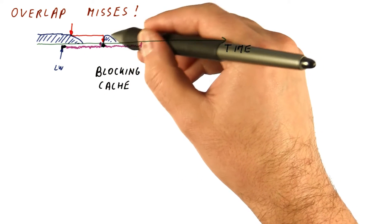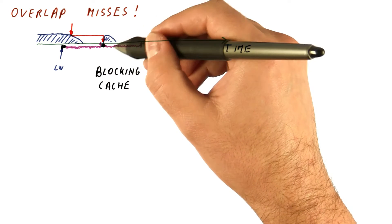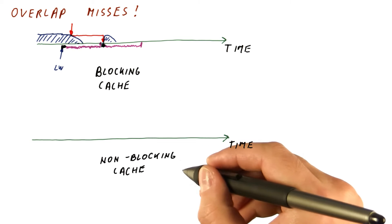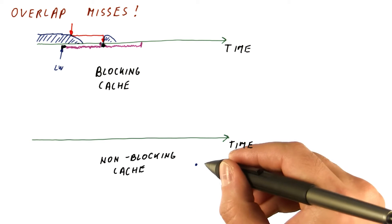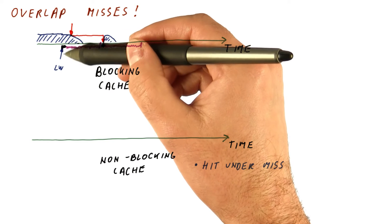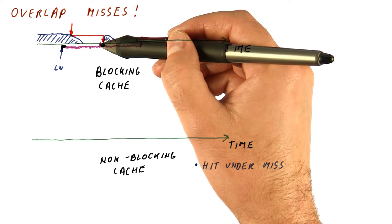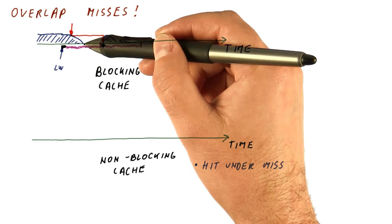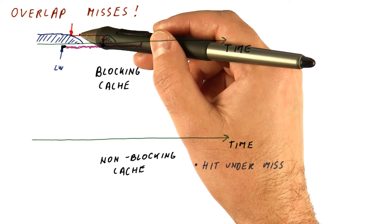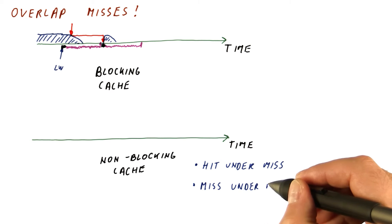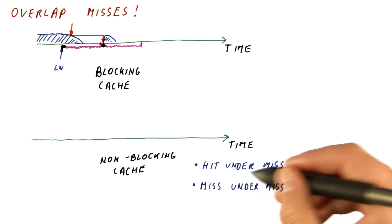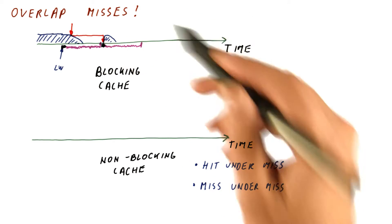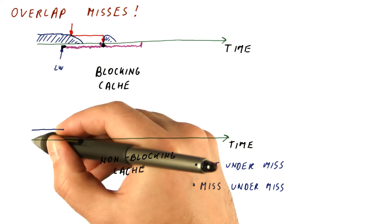We can also have a non-blocking cache. And a non-blocking cache can support things like hit under a miss. Meaning, while we are having a cache miss, hits to other blocks in the cache that are sent by the processor will be serviced and returned to the processor with data. And also we can have what is called a miss under a miss. In which case, while we are having a miss, we can send another request to memory. So let's look at what that looks like.